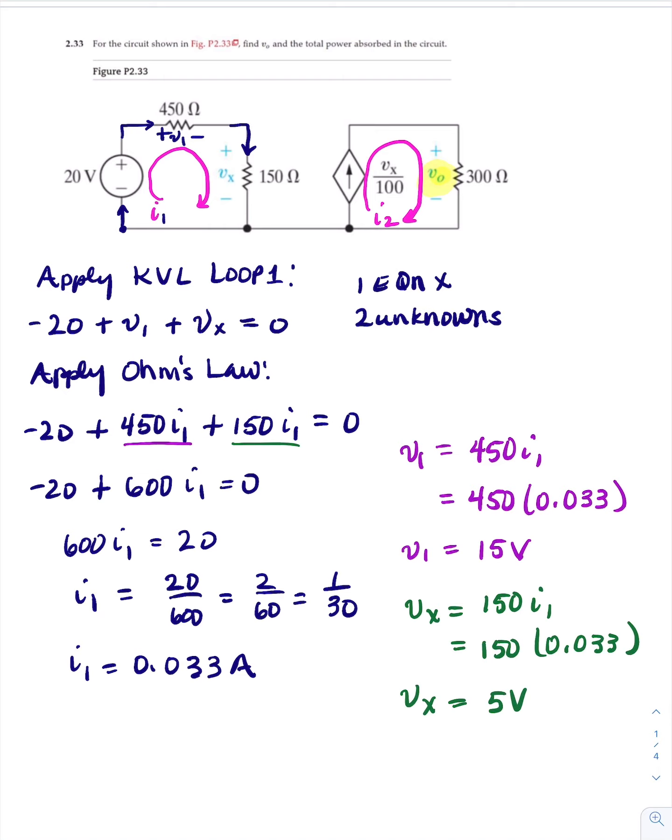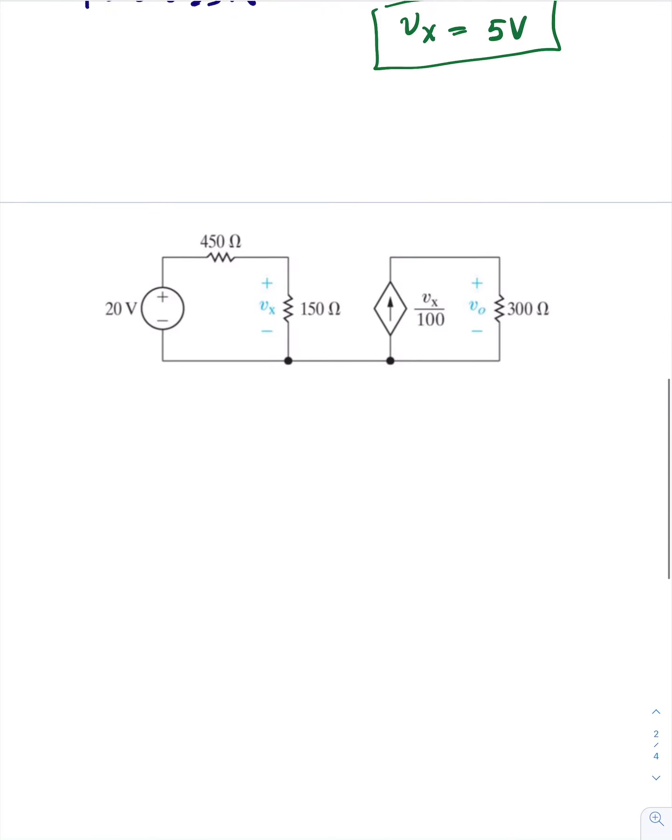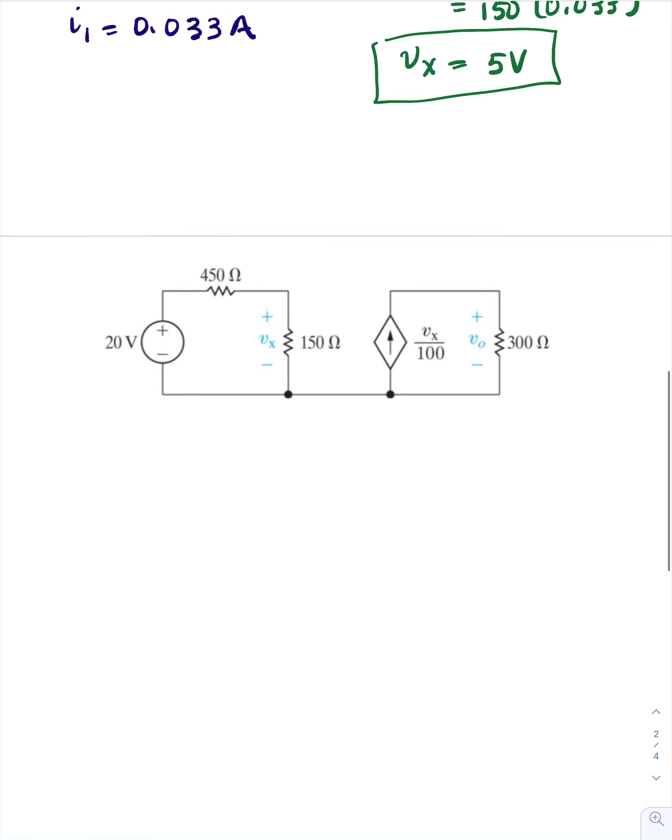We really don't care about V sub one. We're more interested in V sub X. That still hasn't gotten us V sub zero, but we need it because V sub zero has a dependent source, and the dependent source is dependent on V sub X.